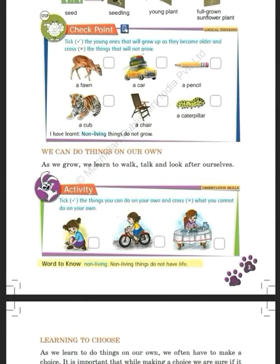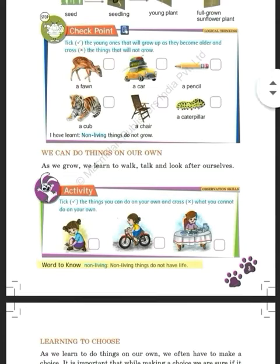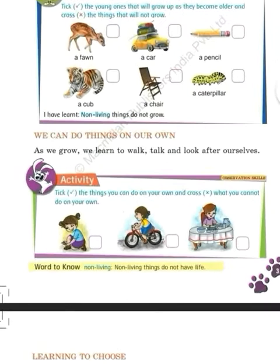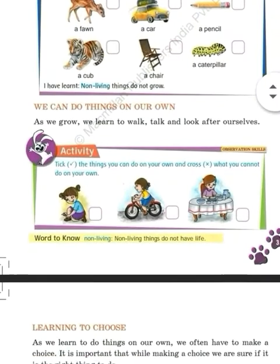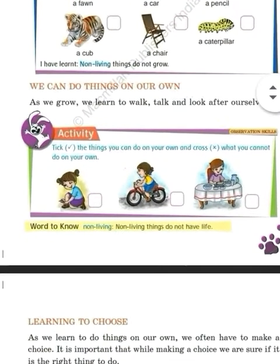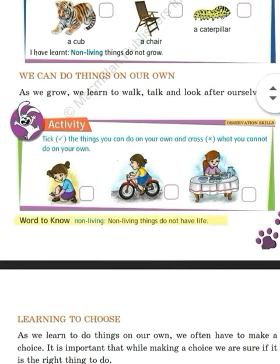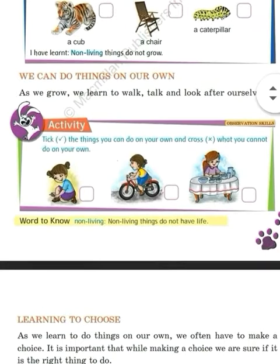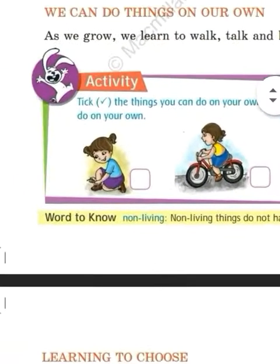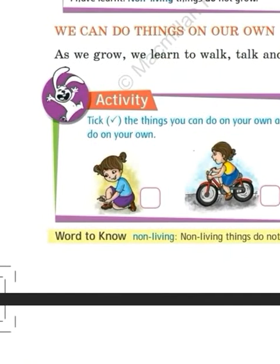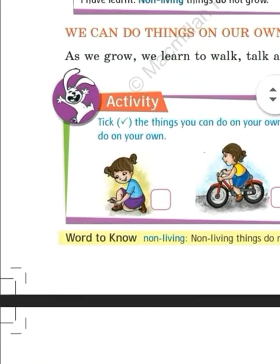There is an activity with one question: tick the things you can do on your own and cross what you cannot do on your own. There is a picture — the first picture shows a child with shoes. If you can do it on your own, then you can tick it.